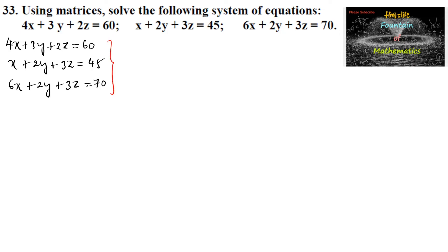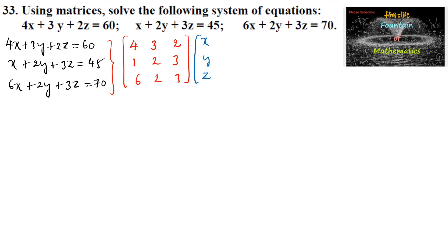The given equations can be written in matrix form by taking the coefficients 4, 3, 2 / 1, 2, 3 / 6, 2, 3 from the three equations on the right side. The variable matrix is xyz, equal to the constant column matrix 60, 45, and 70.